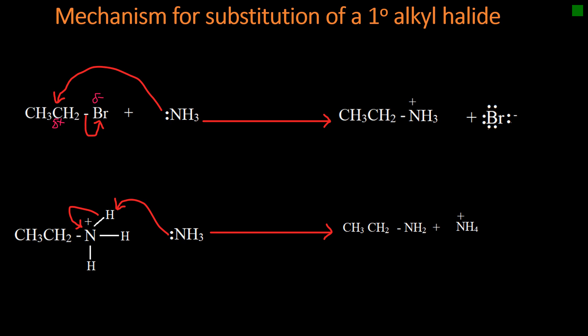This reaction happens in two steps, and the first step is the slow step, so it is the rate-determining step. The mechanism of this reaction is SN2, because two chemical species are involved in the formation of the ammonium ion.